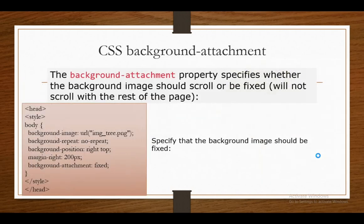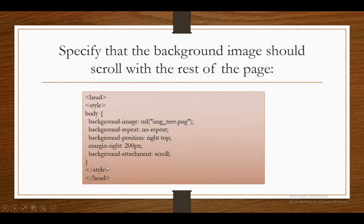The CSS background-attachment property specifies whether the background image should scroll or not — that means when we scroll our web page, the image will not scroll with the rest of the page. Here is the example for background attachment. The first example specifies that the background image should be fixed — the image will be fixed and the text will scroll. We write the value as background-attachment: fixed. In the second example, for the background image to scroll with the rest of the page, we write background-attachment: scroll. Then the image will also be in the same place and will not be seen after we scroll past it.